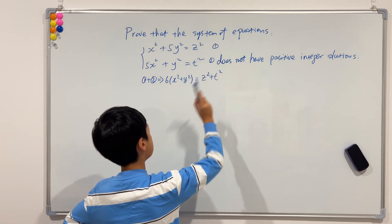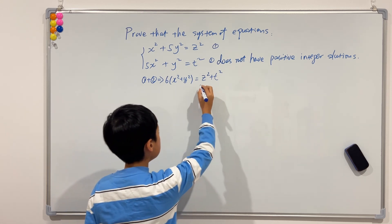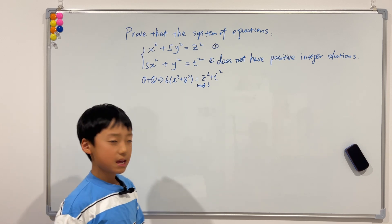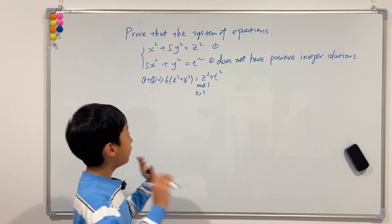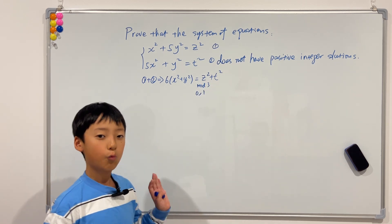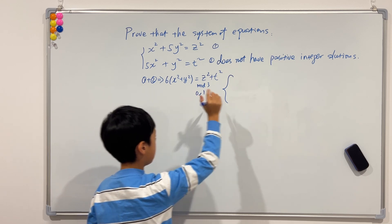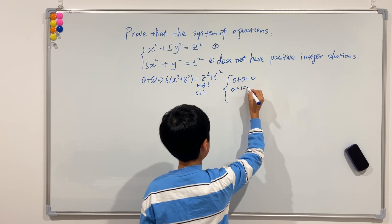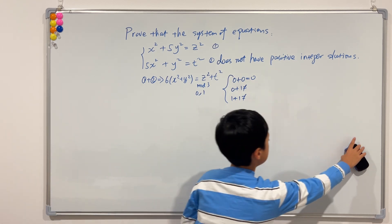This means that z² + t² must be divisible by six, and since it is divisible by six it must be divisible by three. A little note: any positive square number mod three only leaves a remainder of zero or one. So if the whole thing is divisible by three, we must check cases — zero plus zero gives zero which works, but zero plus one gives one, and one plus one gives two, both of which fail.